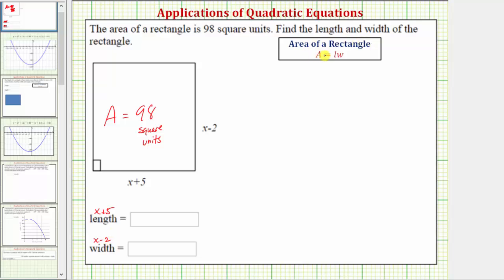And because the area of a rectangle is equal to length times width, we can set up an equation, solve for x, then determine the length and the width.